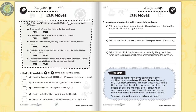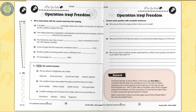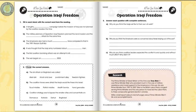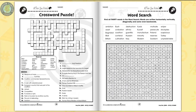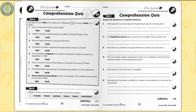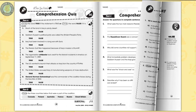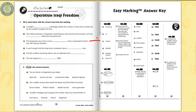The After You Read sections include short and long questions for comprehension, followed by an extension activity. Read about Operation Iraqi Freedom and how it compared to strategies during the Persian Gulf War. Differentiated comprehension skills are measured by a crossword and word search puzzle, then a three-part comprehension quiz.